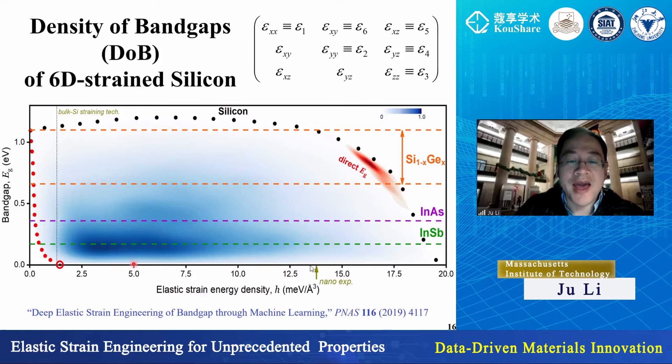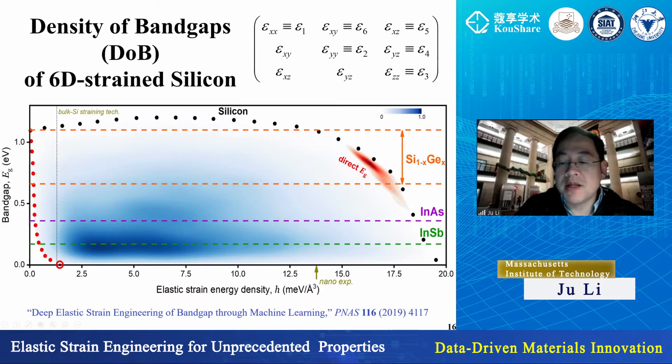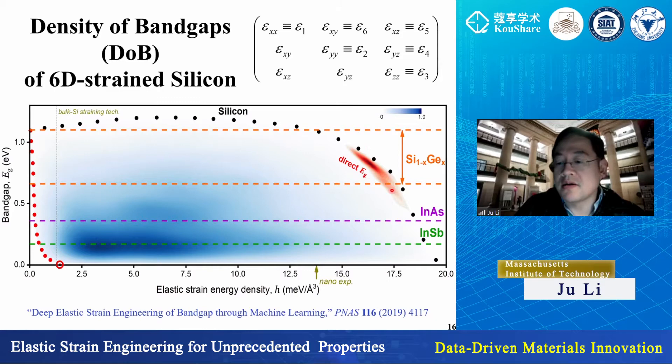Anywhere in between you can get, depending on how much strain energy you put in. Where was Professor Yang Lu's experiment? It was at more than 13–14 meV per ångström cubed. This shows you how much you can change silicon's band structure. If you go a little bit above that experimental point, you get this red island — a direct band gap. Silicon normally has an indirect band gap, so a direct band gap would allow you to make more efficient photovoltaics. The blue is the indirect band gap distribution; the silicon-germanium alloy covers a different infrared range.